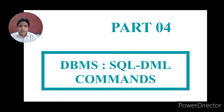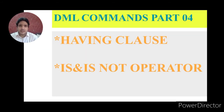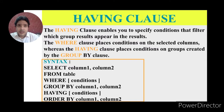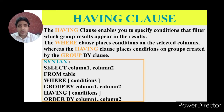Hello guys, today we will discuss DML commands Part 4. In this part we will discuss two commands: HAVING clause, and IS and IS NOT operators. First of all, you know about the WHERE clause — WHERE clause contains the condition which is applied to particular columns having different attributes and different values.